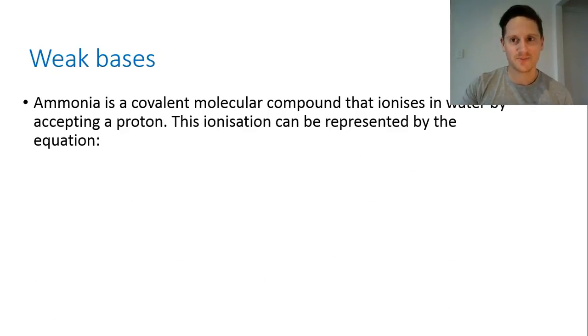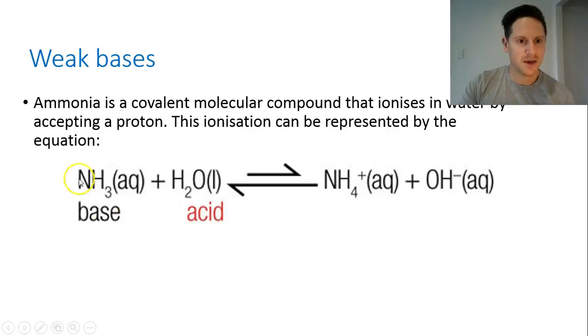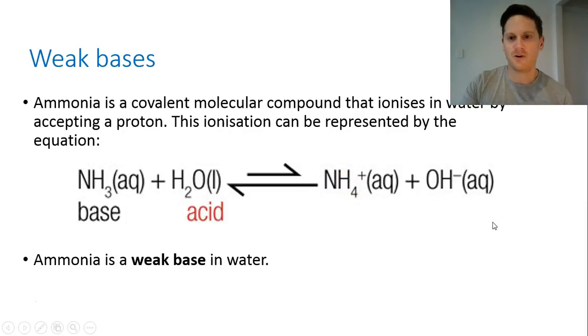So weak bases will be those that accept protons not as readily. An example of this is ammonia. So here's our ammonia. It's a base because it's accepting a proton to form NH4+. Water is the acid because it's donating a proton and the conjugate base is going to be hydroxide. Now again, we've got this equilibrium arrow indicating that you've got a forwards and a backwards reaction. The bottom is larger than the top, which indicates that the backwards reaction is happening more frequently than the forwards reaction. So the majority of species in this reaction are going to be like this, and a small proportion are going to be charged. Therefore, it's a weak base in water.